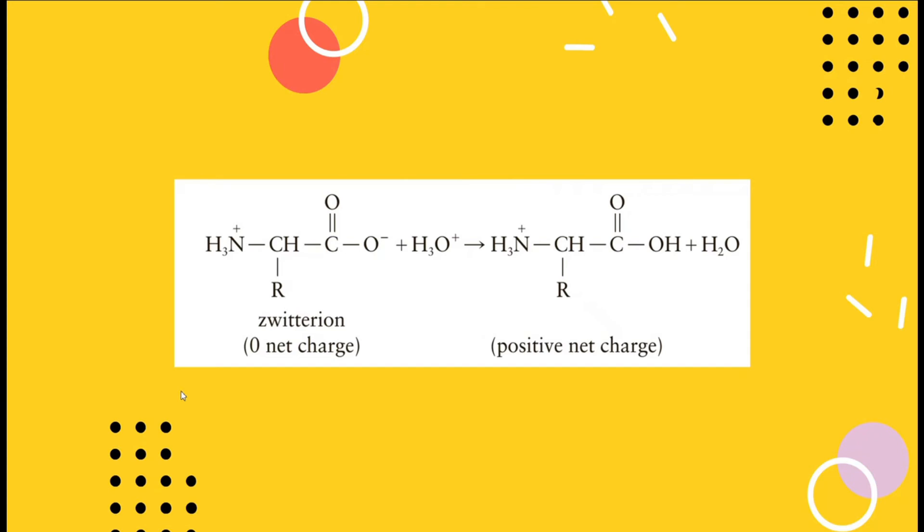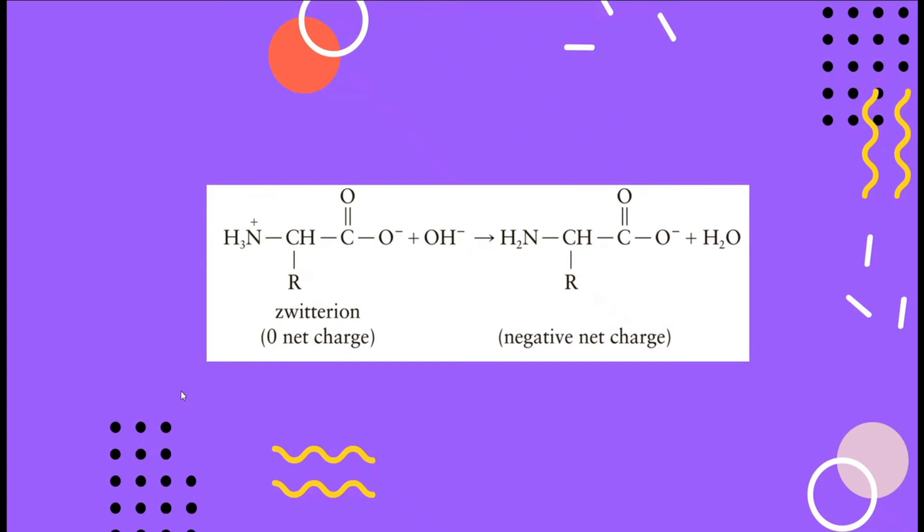What about if the pH of the solution is increased or it is in a basic solution? When the pH is increased by adding a base or the OH group, the amino group bearing the positive charge in the zwitterion will lose a proton, and it will now be converted into a negatively charged species.